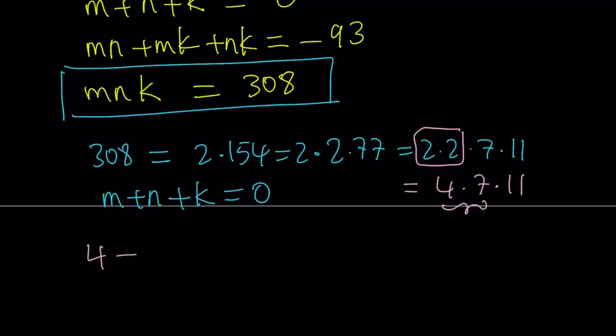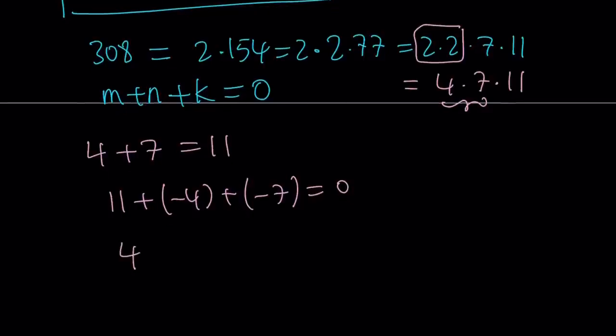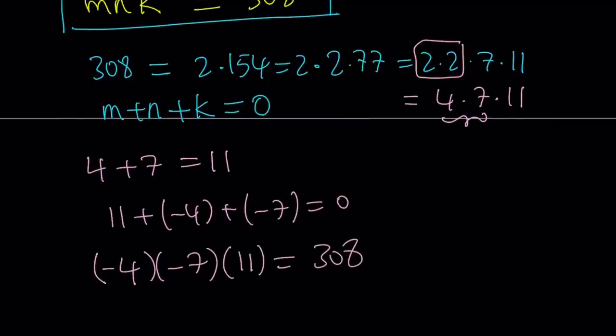So why is that important, right? Well, it's important because if you put everything on the right-hand side, you're going to get the following: 11 plus negative 4 plus negative 7 is equal to 0. And if you multiply negative 4 times negative 7 times 11, you're going to get 308. That's interesting. So that is the product and that is the sum. This is sum. This is the product. So far, so good, right?